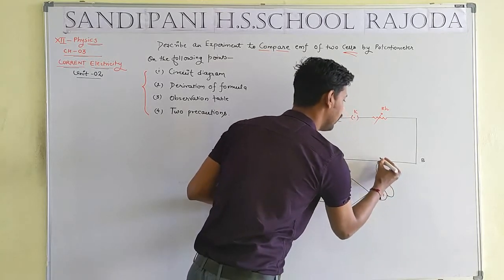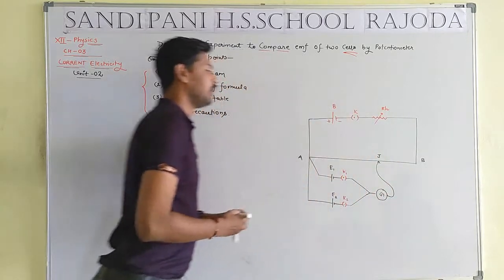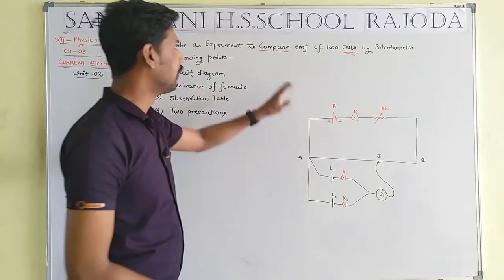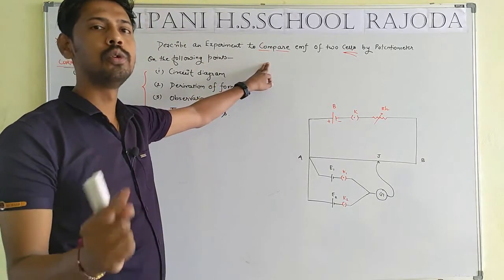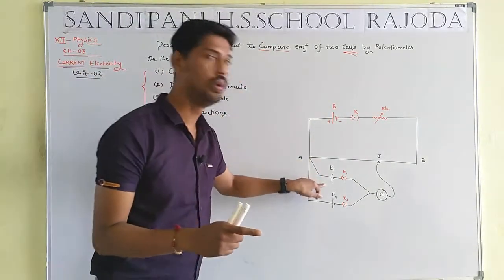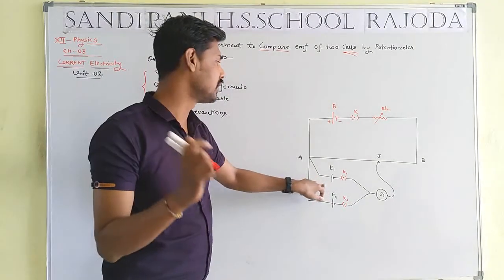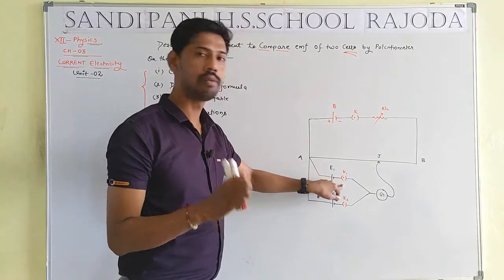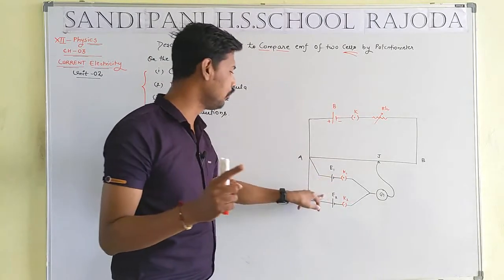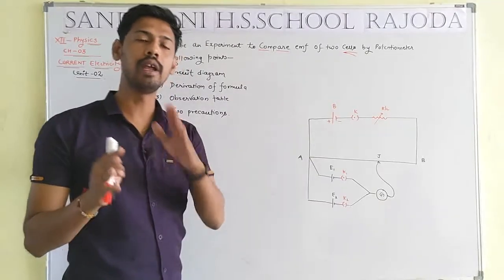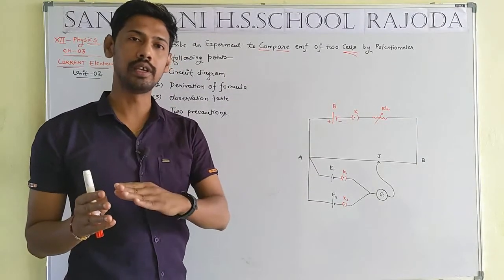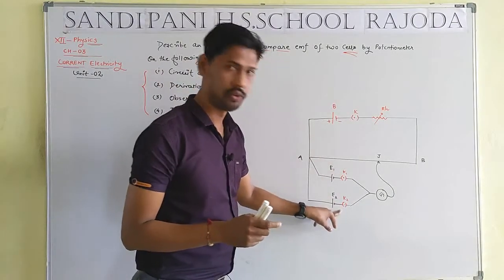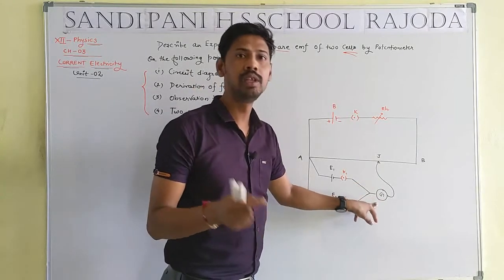The other end of the galvanometer connects with the jockey, capital J. The demand of the question is to compare the electromotive force of two cells. E1 is directly connected with key K1, and E2 is directly connected with key K2. K1 and K2 are both two-way keys, and they are directly connected with galvanometer G.